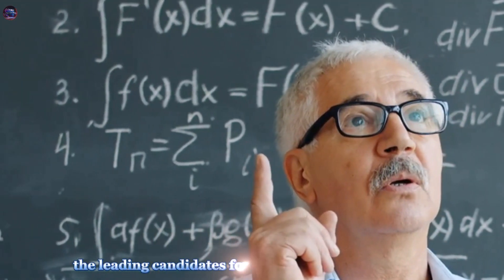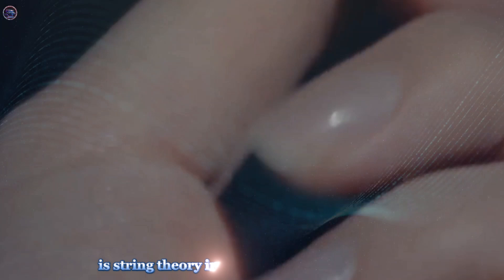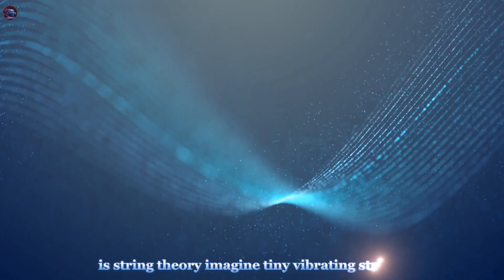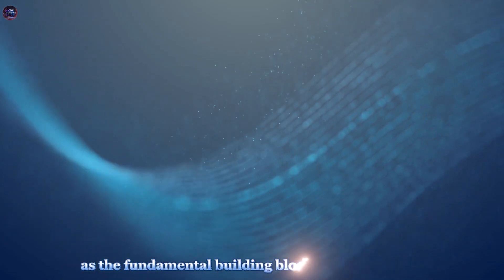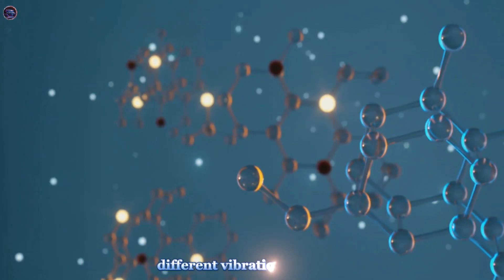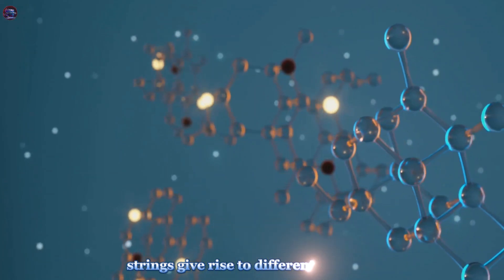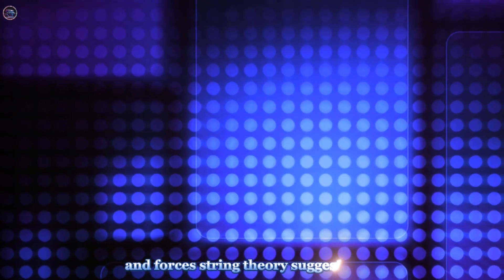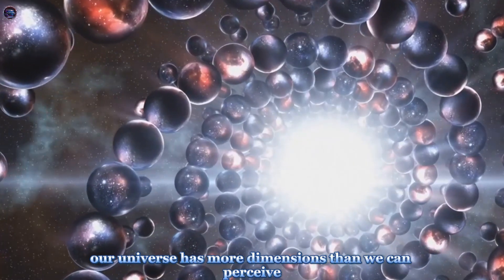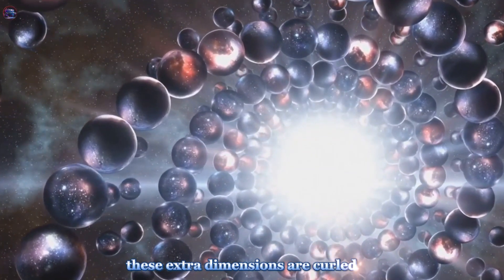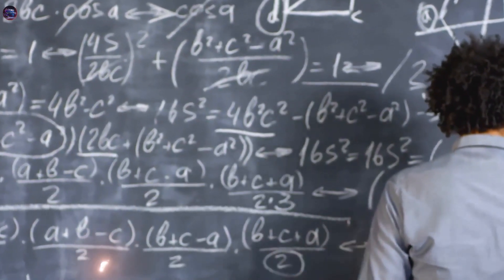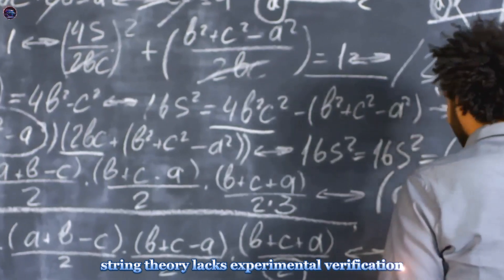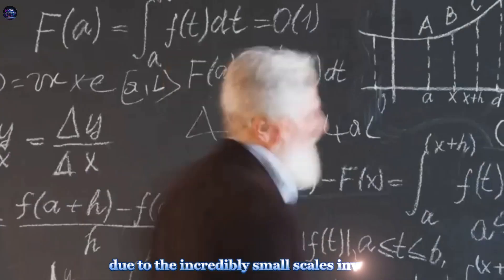One of the leading candidates for a theory of quantum gravity is string theory. Imagine tiny vibrating strings, much smaller than atoms, as the fundamental building blocks of the universe. Different vibrations of these strings give rise to different particles and forces. String theory suggests that our universe has more dimensions than we can perceive. These extra dimensions are curled up and hidden from view. While mathematically elegant, string theory lacks experimental verification due to the incredibly small scales involved.